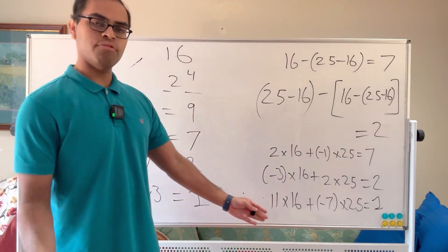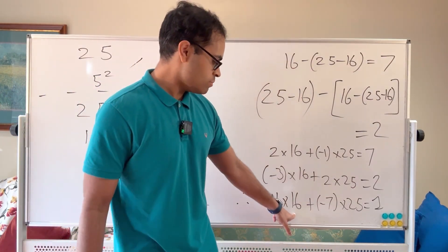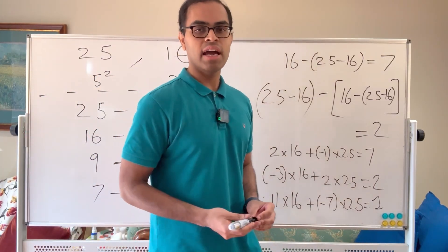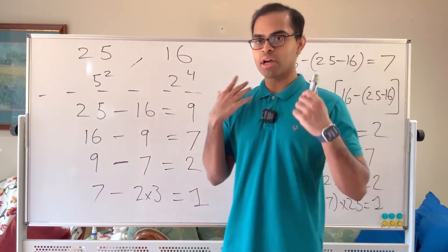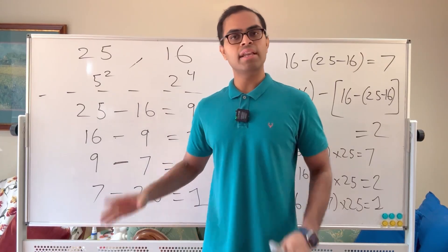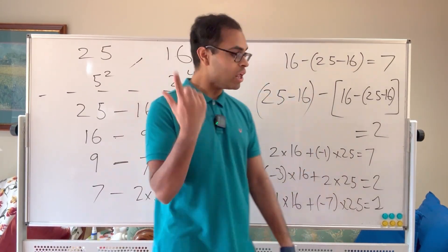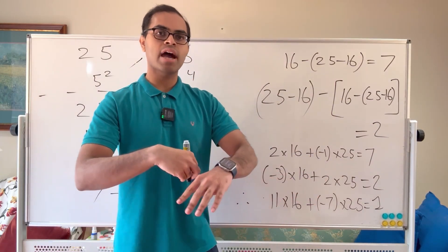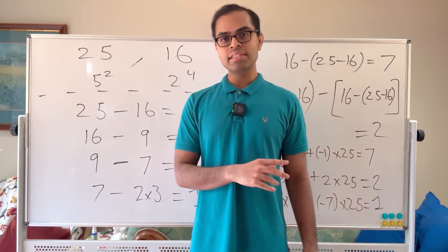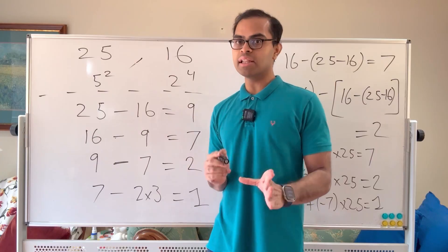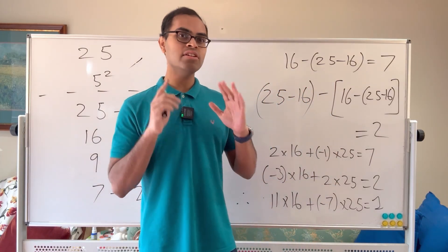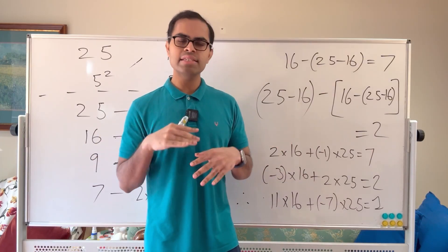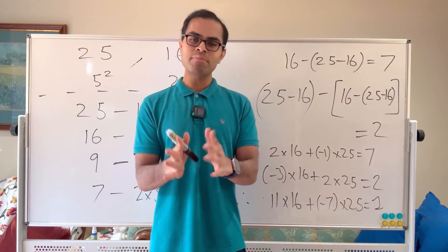So we've found x equals 11 and y equals negative 7, giving 16 times 11 plus 25 times negative 7 equals 1. Practice this with other examples and think about how to find all the x's and y's — are there other solutions? I'd love to hear your thoughts in the comments. Check out my next video on the Euclidean algorithm proof, and if you enjoy number theory, there's also a video on why harmonic numbers are never integers, which connects to the Riemann hypothesis. Have an amazing day!